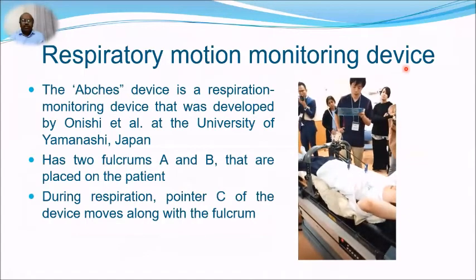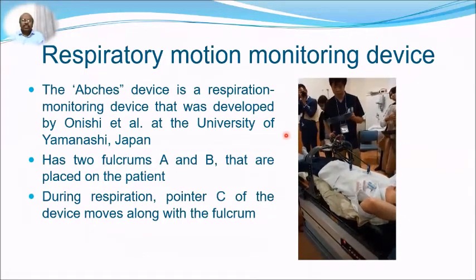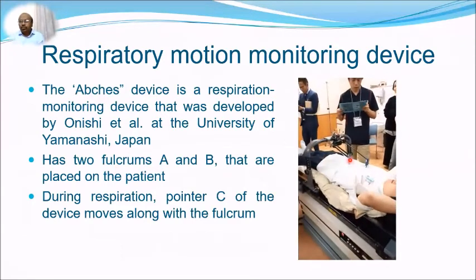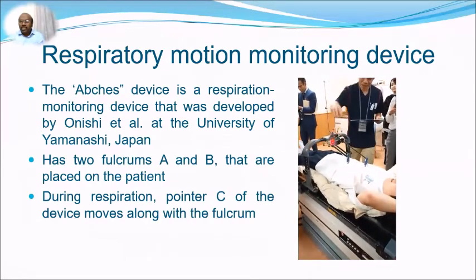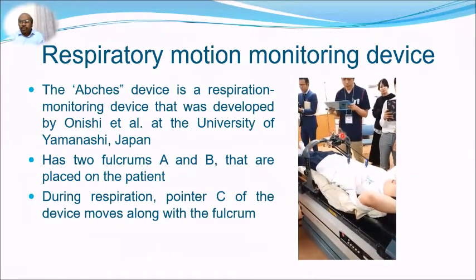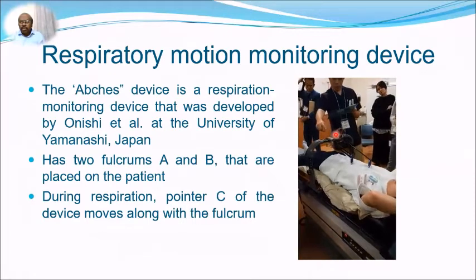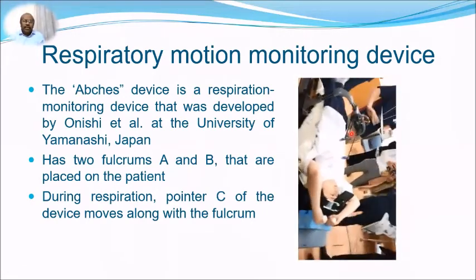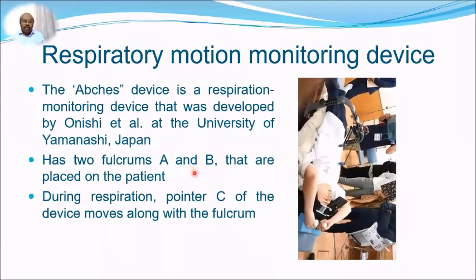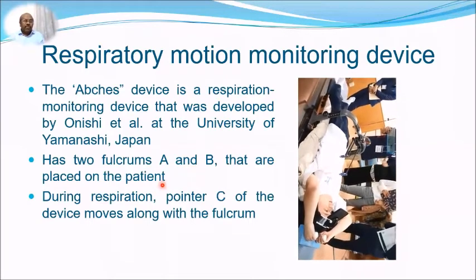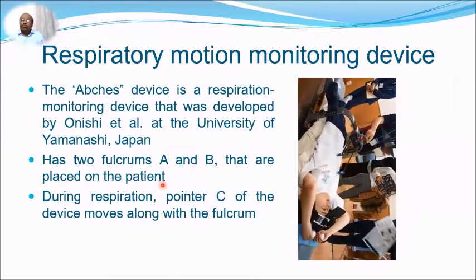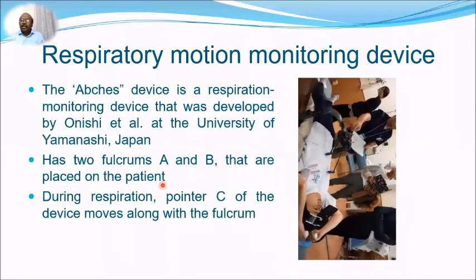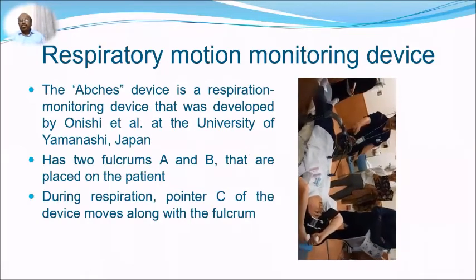One respiratory motion monitoring device is the ABCHES device from Japan. It has two fulcrums (A and B) attached to a pointer (C) that moves in different directions depending on the breathing motion. When the patient holds their breath, the pointer stops and a clip is placed at that position, monitored via video camera from the control room. This system is not interfaced directly with the linear accelerator, so treatment must be stopped manually, though a newer version interfaces with the linac automatically.